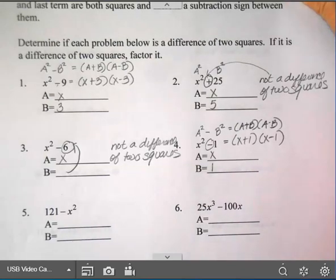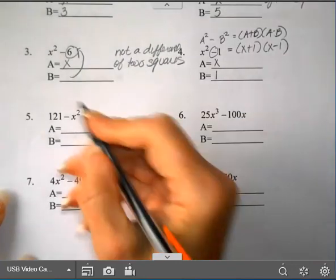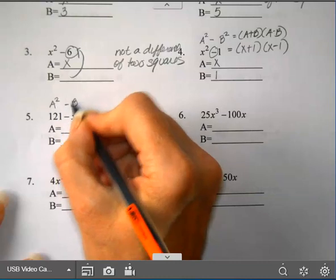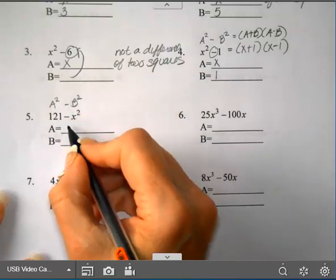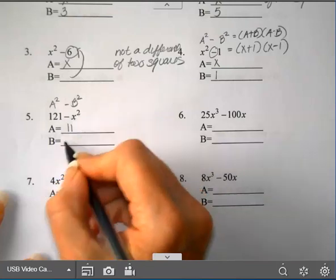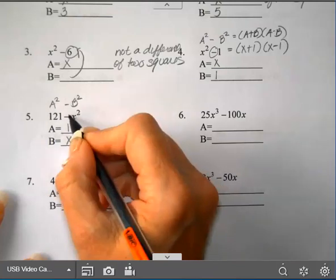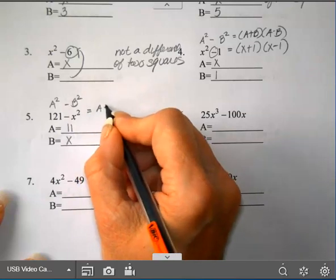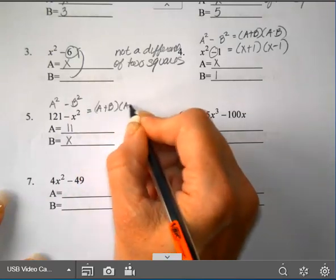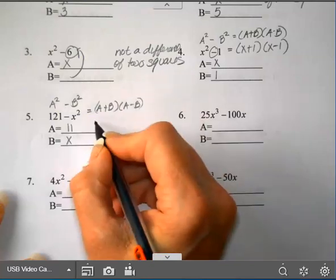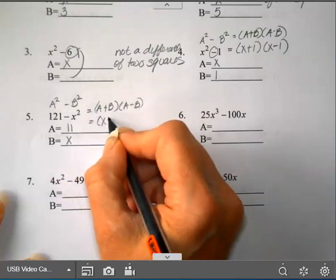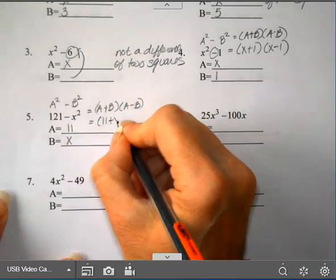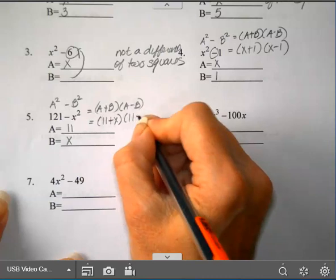On number 5, is the first term a square? It is — square root of 121 is 11. This other term is a square, that's x. There is a minus between them. So this is (a + b)(a − b), giving (11 + x)(11 − x).